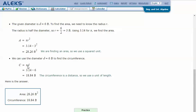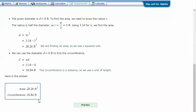We can use the diameter d = 6 feet to find the circumference using πd. So plug these numbers in: we have 3.14 times 6 equals 18.84 feet. The circumference is a distance, so we use a unit of length. And so area is 28.26 feet squared and circumference is 18.84 feet.